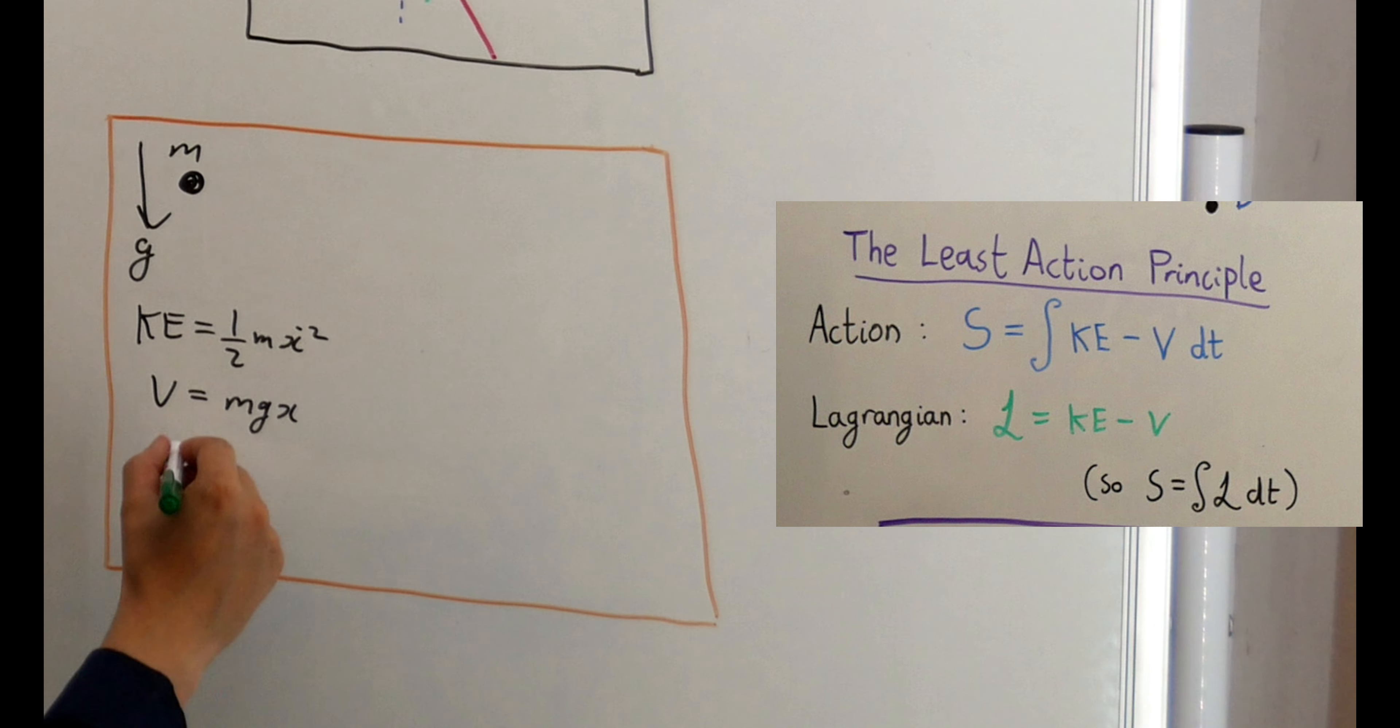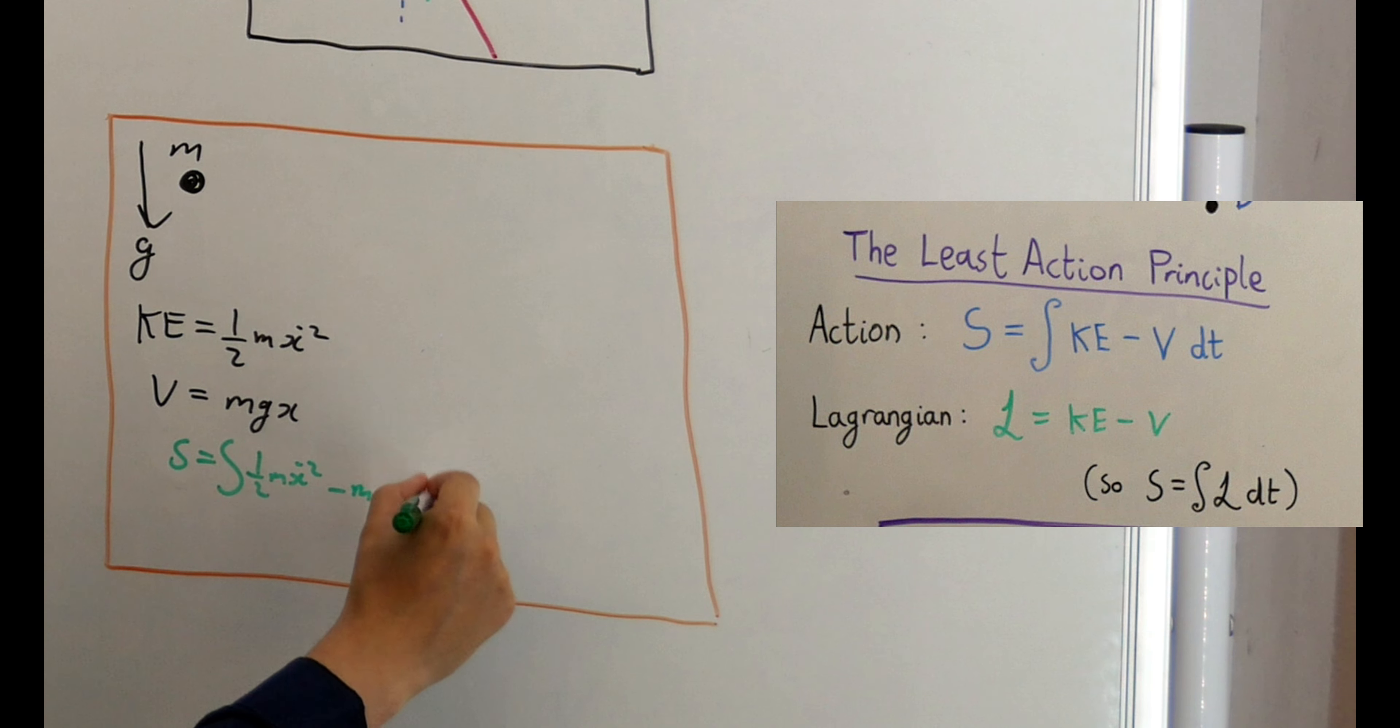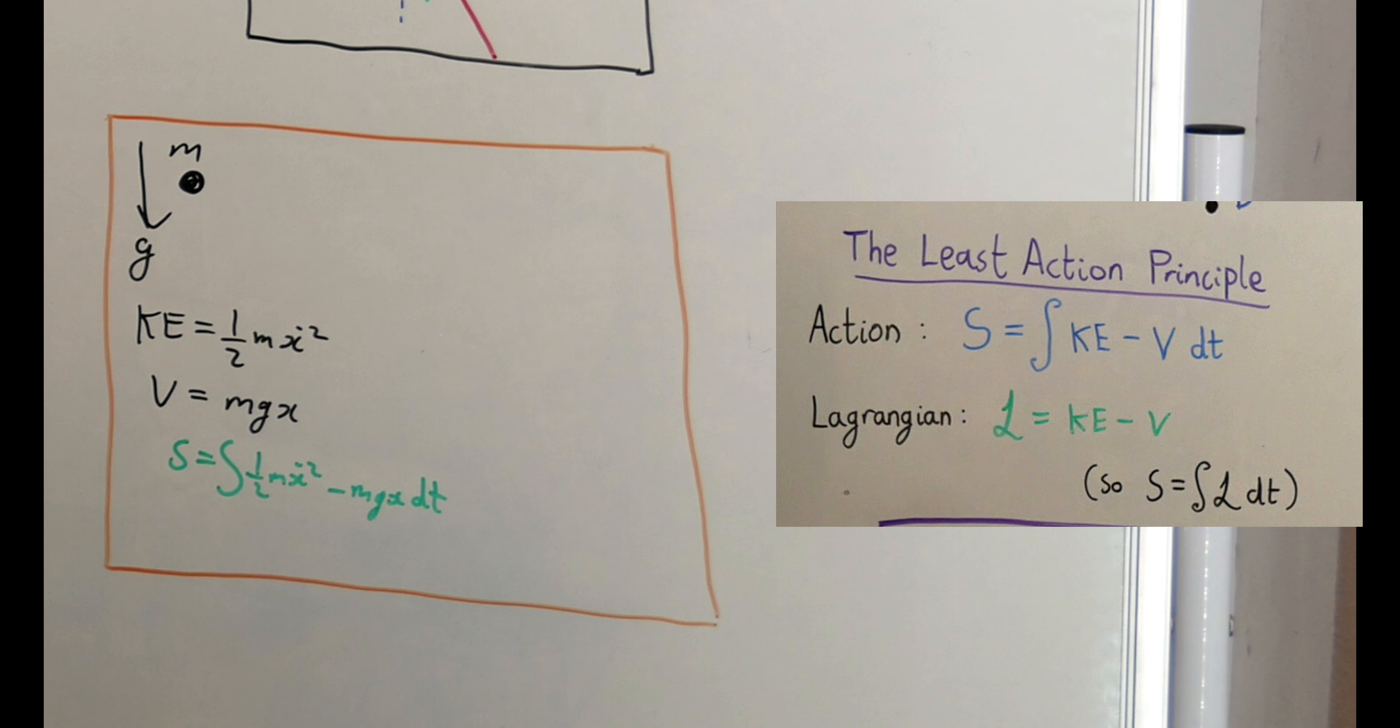In this case, our action s will be the integral of the kinetic energy half m x dot squared minus the potential energy m g x with respect to time. We call this combination of energies l, and it is a function of the particle's position and velocity. This function l is what we call the Lagrangian, and we'll see that it has a special significance.